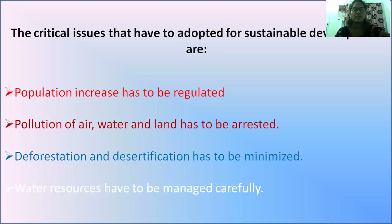Once again, the main concept of sustainable development is economic and social development that provides resources to the present generation as well as ensuring availability to future generations. It includes preserving the environment for a better life for ourselves as well as for future generations. The main mode is that development of the economy has to be integrated with environmental improvement, and the aim is to improve the quality of life while reducing the impact on the environment.